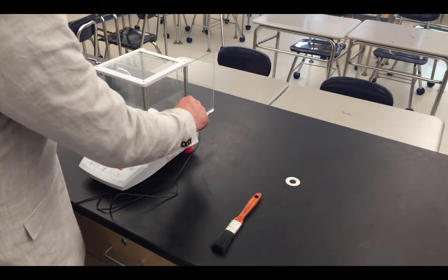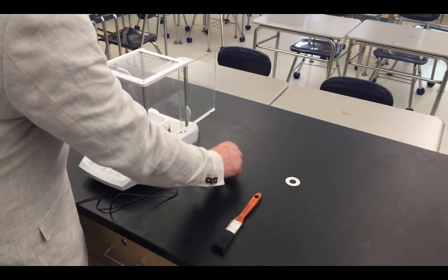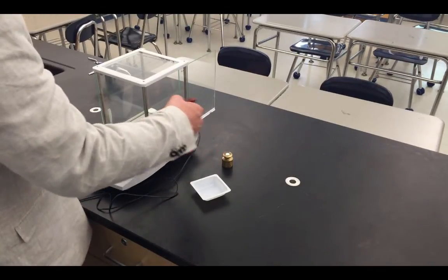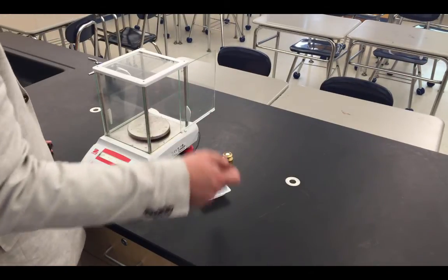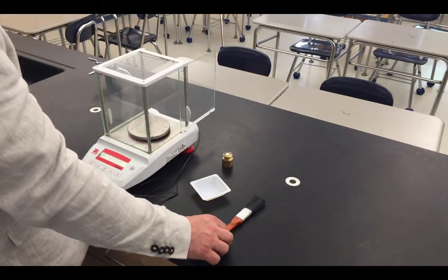When you are done with your sample, the last order of business is to take your chemicals off. Make sure once again the balance is cleaned by using the brush to brush off any chemicals that you might have spilled. This ensures that the balance stay in good shape and it's ready for the next person to use.